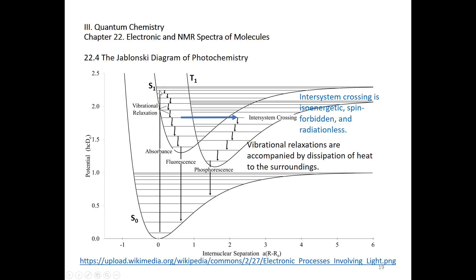The molecule is excited to the S1 first excited singlet electronic state. We can see some vibrational relaxation from there. The vertical arrow pointing downward is called fluorescence, in which a photon is emitted. This is an ultrafast process as well, usually nanoseconds. For phosphorescence, after we excite an electron to S1, we can go down through inter-system crossing.